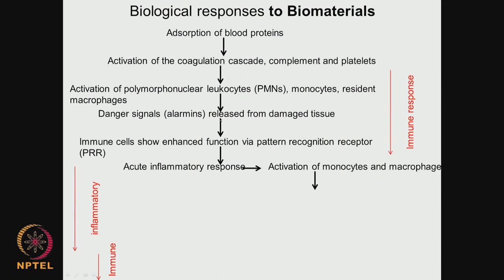Then danger signals — called alarmins — are released from the damaged tissue. Immune cells show enhanced function by a pattern recognition receptor, so they are able to identify that the material has a certain pattern, and some factors get released. All these are called immune responses. So the sequence is: activation of coagulation, activation of complement, activation of platelets, then activation of polymorphonuclear leukocytes and macrophages which are involved in the engulfing or encapsulation of the biomaterial. Then signals are produced and immune cells show enhanced activity.